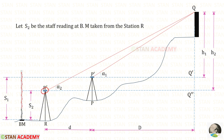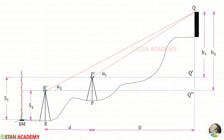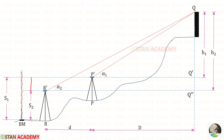From station R, we see the staff at the benchmark. Let us keep that staff reading as S2. Station P is the nearer station to the object. The instrument axis at station P is higher than the instrument axis at R — that is why this case is known as instrument axis at the station nearer to the object is higher. All readings related to station P use suffix 1: angle alpha 1, height H1, staff reading S1. All readings related to station R use suffix 2: angle alpha 2, height H2, staff reading S2. The difference S equals S2 minus S1, and S will be equal to H2 minus H1.